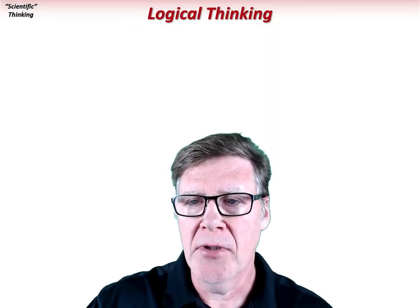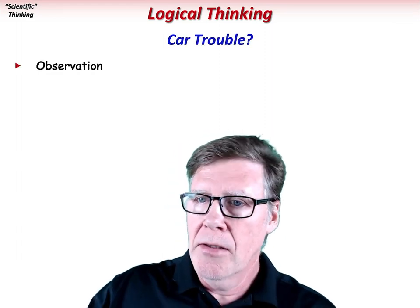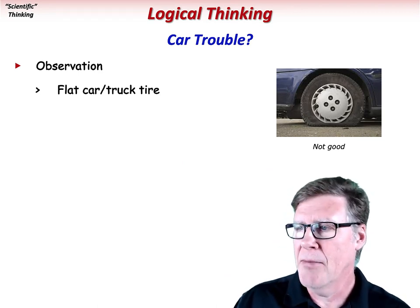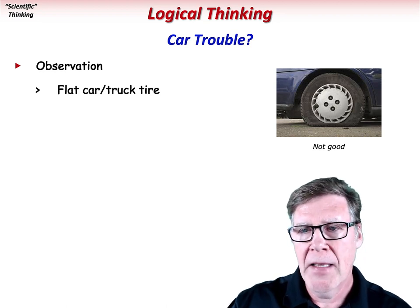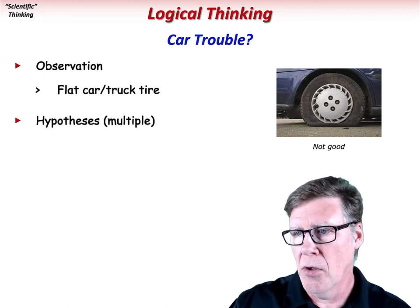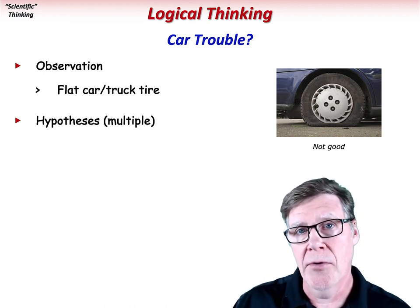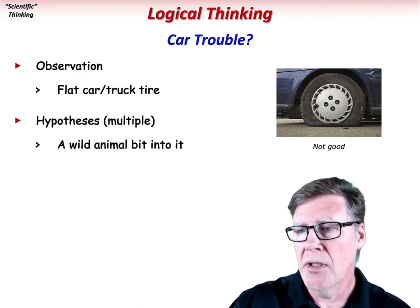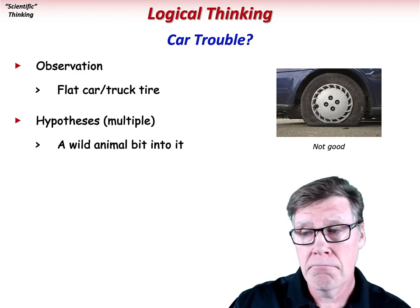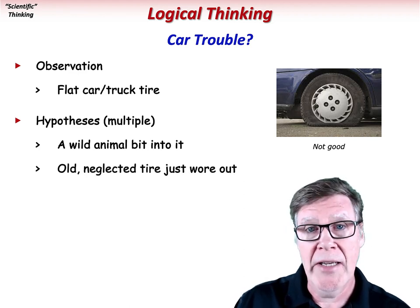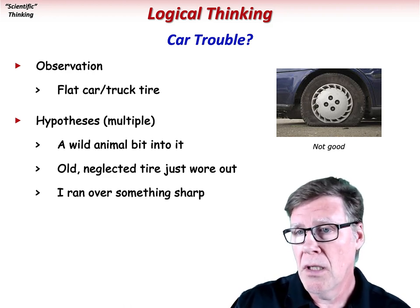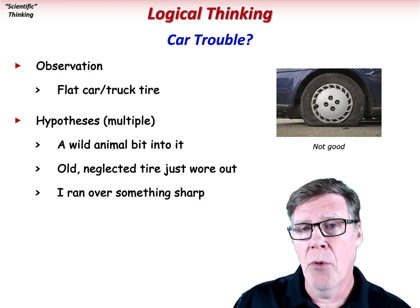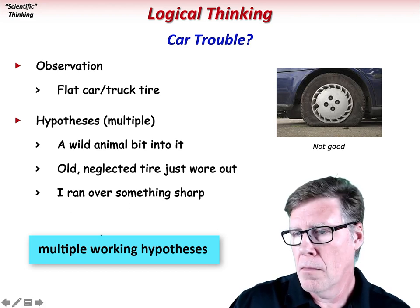Here's a simple example of the scientific method. One of your tires is flat — that's an observation, one that we hope we never make. How did that happen? That's a question that needs an answer. So we form multiple explanations, or hypotheses. Some hypotheses to explain the flat tire may include: a wild animal bit into it, the old neglected tire just plain wore out, or I previously ran over something sharp. These are all possible explanations — what we call multiple working hypotheses.